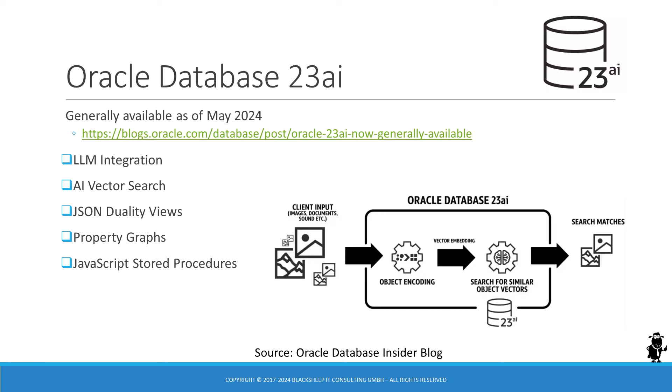AI features are not the only reason to be excited about the future. Other Oracle Database 23AI features like JSON duality views, property graphs, or JavaScript stored procedures can all be very interesting for Siebel CRM customers. Thanks for watching, take care, and bye-bye.